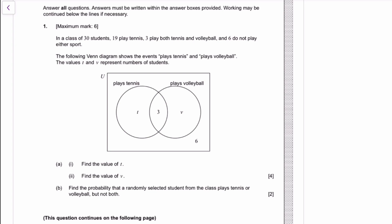The first question shouldn't be hard. There are 30 students, 19 of them play tennis, so this whole circle has 19 people. It should be obvious immediately that T must be 16 because 16 plus 3 is 19. Three play both, and 6 don't do anything. What's V? Well, the total number of people is 30, so 16 plus 3 plus V plus 6 needs to equal 30.